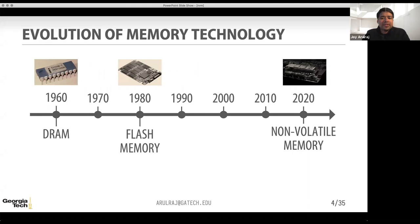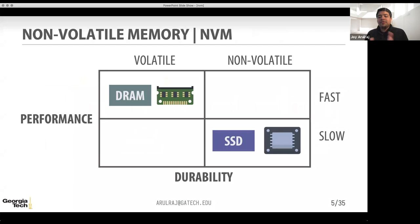This timeline shows the evolution of memory technology over the last several decades. We have DRAM that came around in the 1960s, and right now in the last decade, we are at a unique point in this timeline with the advent of non-volatile memory technologies. This gives us a unique opportunity to redesign software systems from first principles. I will refer to persistent memory, non-volatile memory, or storage class memory as NVM in this talk.